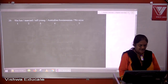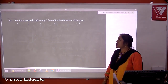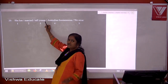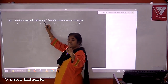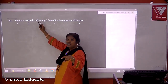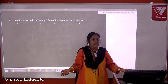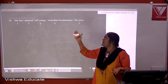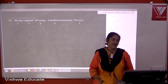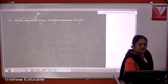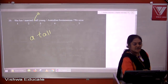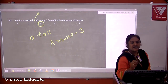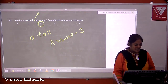Question twenty: she has married a tall young Australian businessman. We are talking about one person — a countable singular noun. 'Tall' begins with a consonant sound, so we use 'a'. The correct form is 'a tall young Australian businessman'. The answer is three.